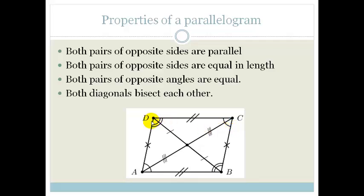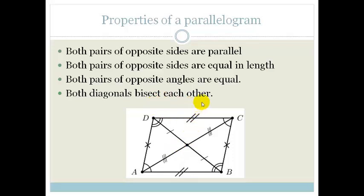And finally, diagonals bisect each other — in other words, they cut each other in half. They're not equal; they cut each other in half. The length from D to the intersection point equals from that point to B, and the other diagonal is also split in half. Now let's look at how we can prove some of these properties.